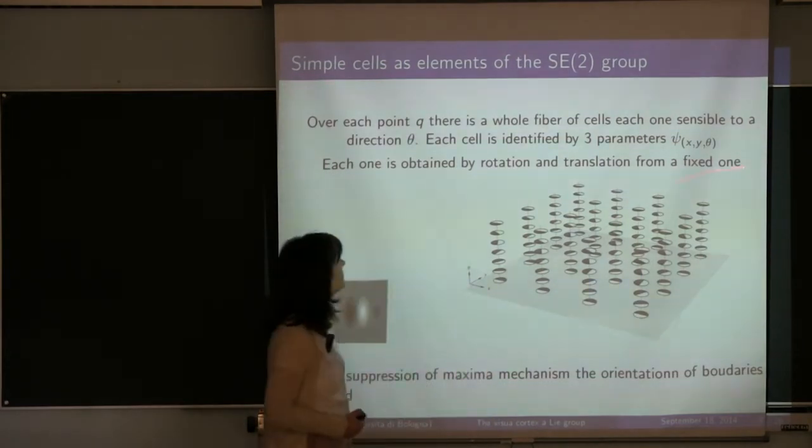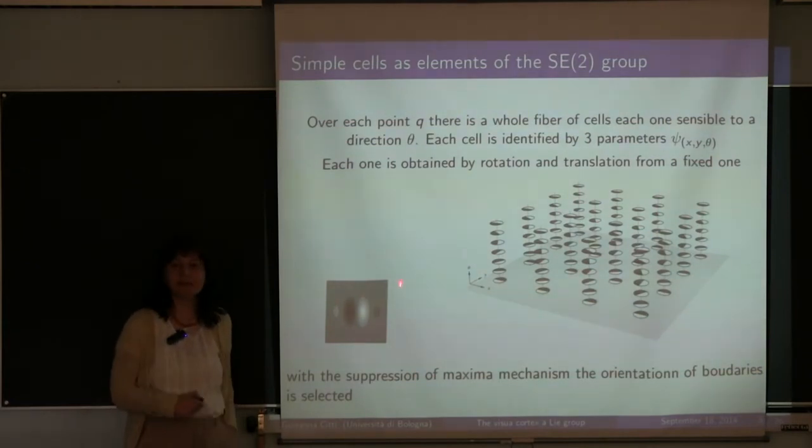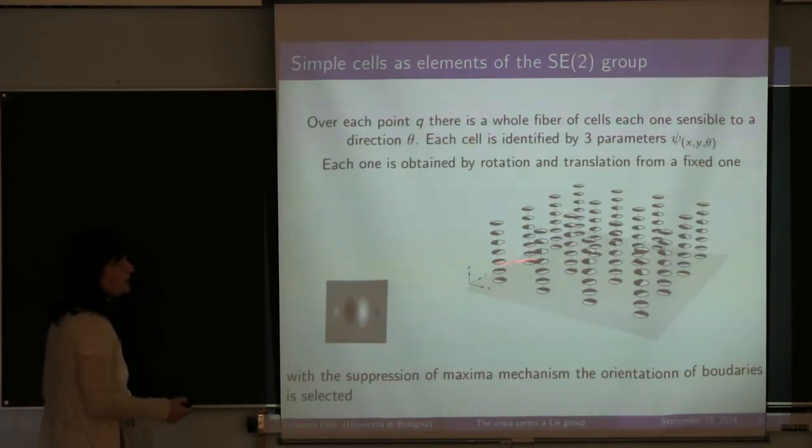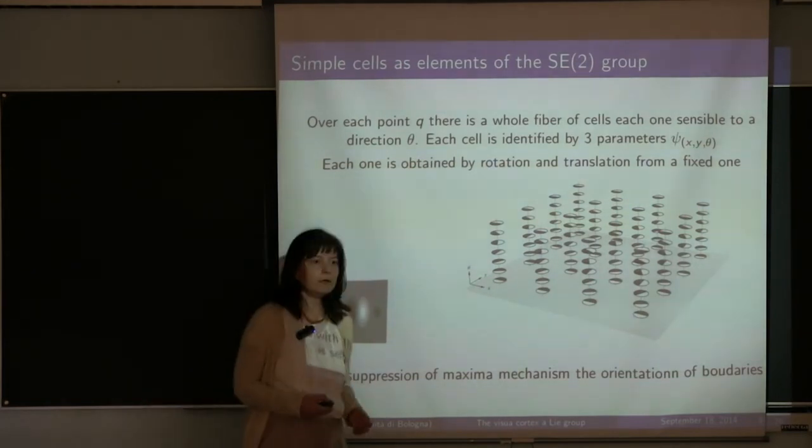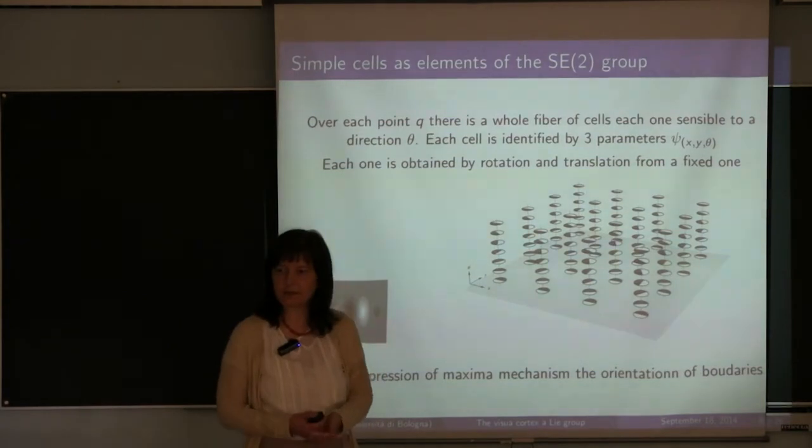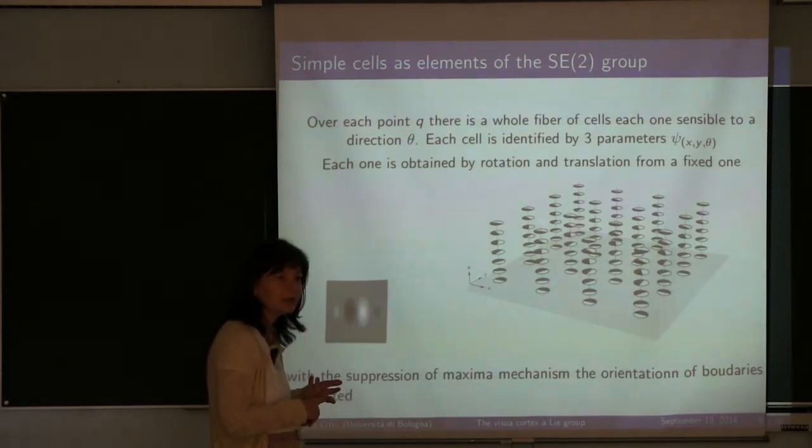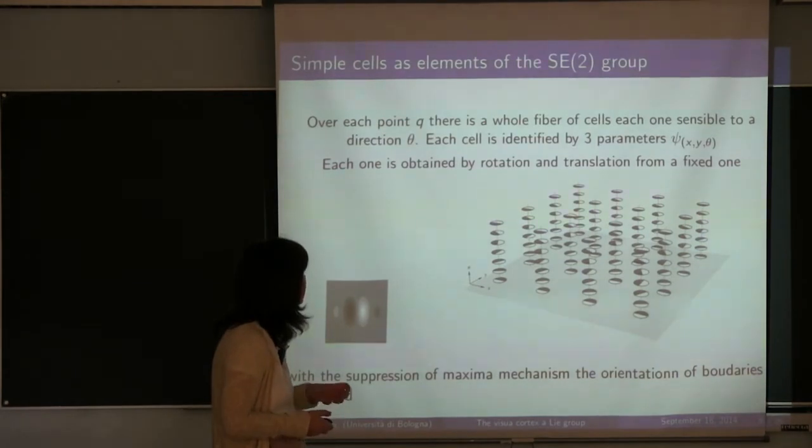As for the simple cells, we have already seen this morning that they have this very directional shape. This is somehow also similar to the wavelet you have introduced before. And the group of simple cells is SE2. So over each point we have a whole fiber obtained by rotation. And the same is repeated over each point. So the group here is the Lie group of rotation and translation. And what we have tried to see, and we have already seen this morning, is that the whole structure of connectivity and shape of cells and everything is strictly connected by the fact that this group is the group of rotation and translation.